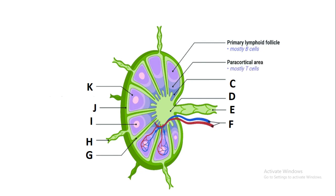If you look at B, B is just the paracortical area which mostly contains T cells. Let's quickly look at C, which is the medullary cord — the medullary cord normally consists of macrophages and plasma cells. The plasma cells are coming from the B lymphocyte and the macrophages are originating from the monocyte.